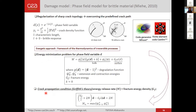This means we model stiffness degradation in tension and can have stiffness recovery in compression. The fracture propagation condition is similar to Griffith theory, where the energy release rate must be greater than the fracture energy, and the energy release rate is the maximum positive energy in history. Overall, this is a model with two main parameters: the characteristic length governing the size of the damage zone, and the fracture energy as a parameter defining the resistance of the material.